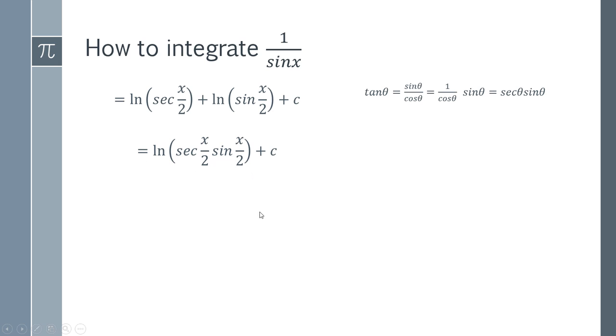We can then notice that our tan θ is sine over cosine. And if we split that up a little bit, we get 1 over cos times sine. 1 over cosine is secant. And then we're left with our sine there. So we've got secant times sine, and we can actually replace that with tangent. Because tan θ equals secant θ times sine θ.